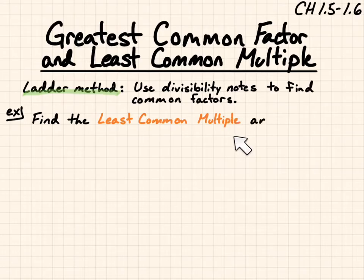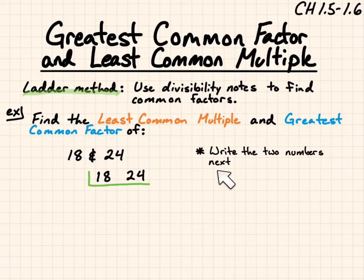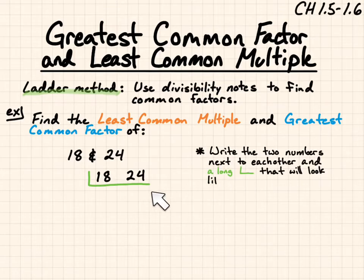Find the least common multiple and greatest common factor of 18 and 24. First, we write the two numbers next to each other and a long L that will look like a ladder as we go through this.